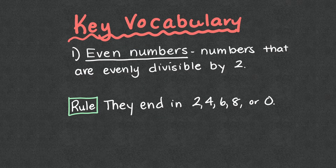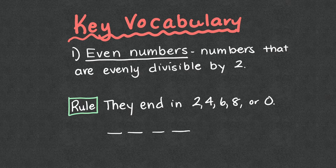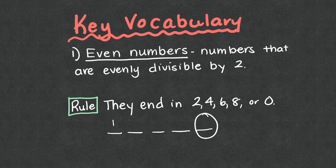Key vocabulary. Even numbers are numbers that are evenly divisible by two. The rule is that they end in two, four, six, eight, or zero. So no matter how many digits a number has — say we have a five-digit number — as long as the ending number ends in a two, four, six, eight, or zero, that is totally fine. So we could have 111,114, and that's going to be an even number because of what it ends in. This ending number is what is most important.